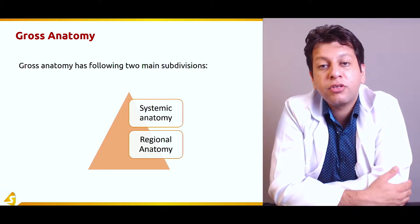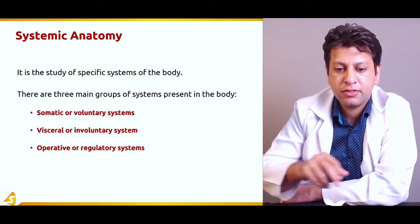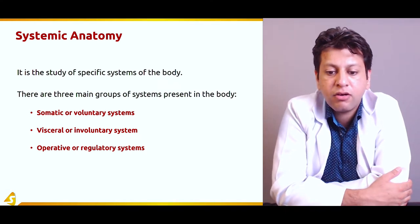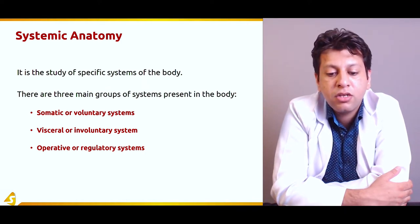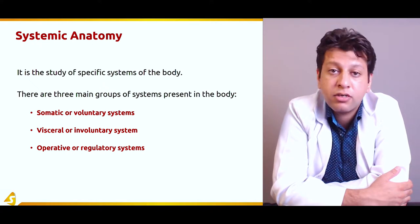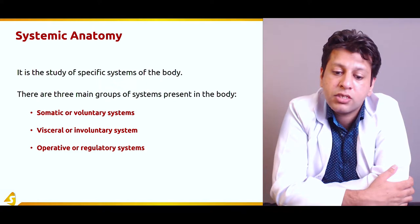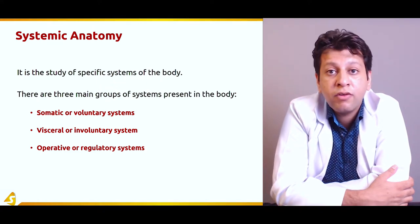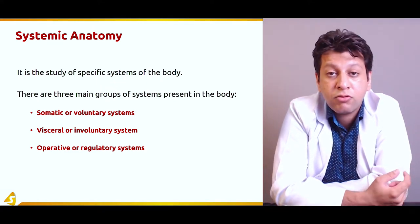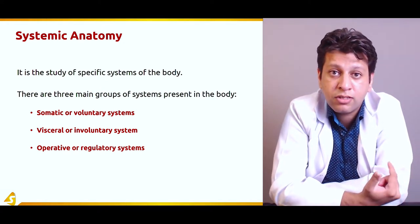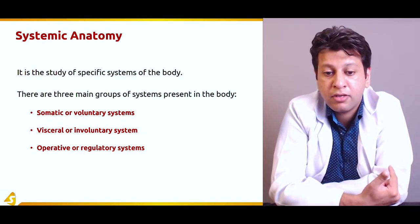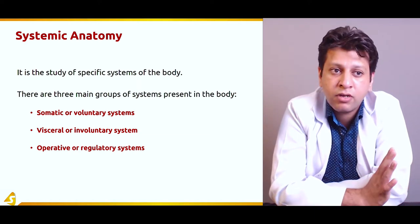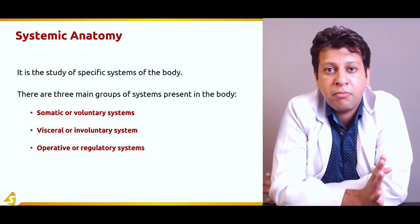The systemic approach is the study of specific systems of the body. There are three main groups: somatic (voluntary) systems, visceral (involuntary) systems, and operative or regulatory systems. For example, the circulatory system falls in the visceral involuntary system — we do not consciously control our heart; it pumps blood without us being aware of it.